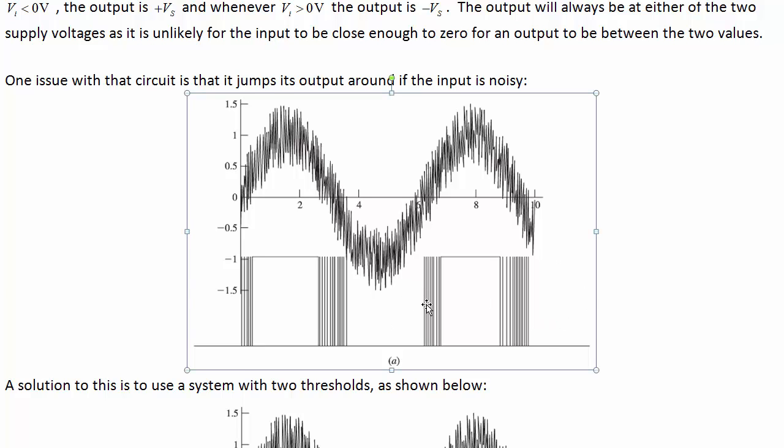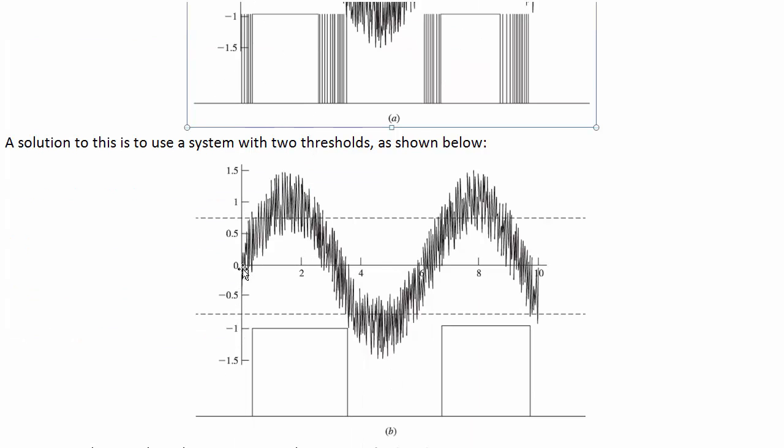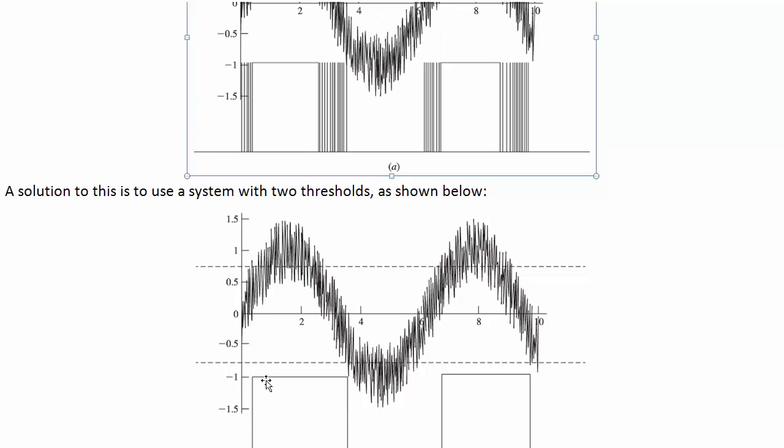One way we might fix this is with some thresholding where we say, okay, we're going to make it so that as soon as it rises above this upper threshold here, then we say the input is now considered high. And then we don't consider it low again until it rises below this lower threshold.